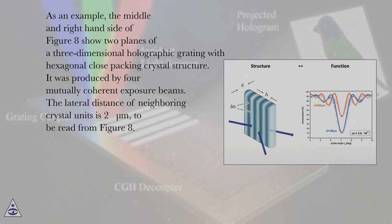As an example, the middle and right-hand side of Figure 8 show two planes of a three-dimensional holographic grating with hexagonal close packing crystal structure. It was produced by four mutually coherent exposure beams.